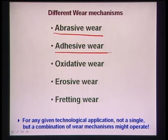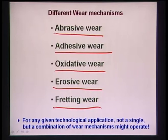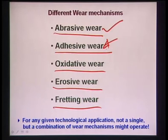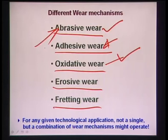Wear mechanisms can be classified into five primarily distinguishable mechanisms: abrasive wear, adhesive wear, oxidative wear, erosive wear, and fretting wear. For any given application, not a single but a combination of wear mechanisms may operate - for example, abrasive wear dominant with some contribution from adhesive wear, or oxidative wear dominant with some abrasive contribution.